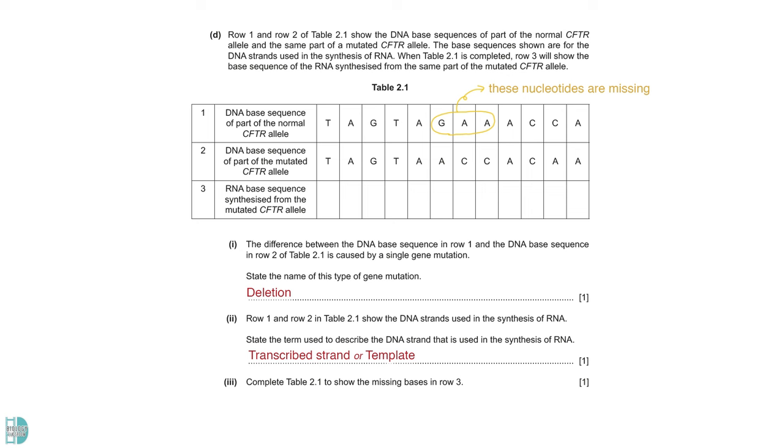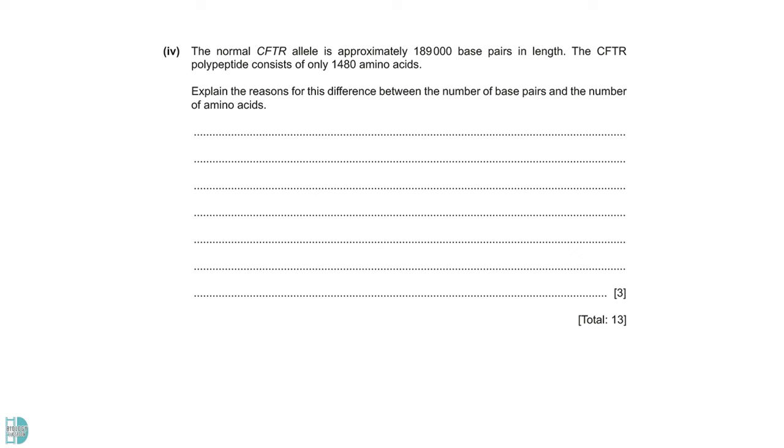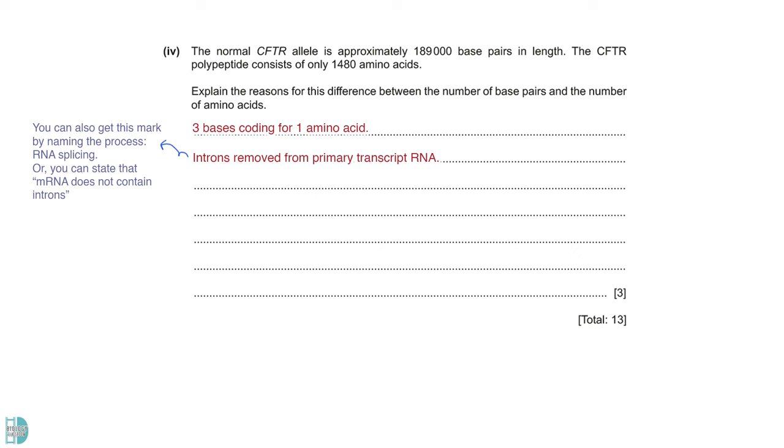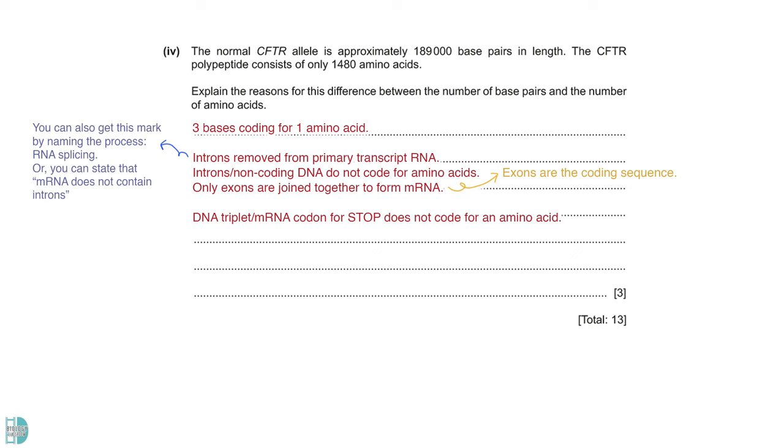Question 3 asks you to complete the third row in the table. The RNA base sequence of an mRNA is complementary to the DNA it is synthesized from. Question 4 says the normal CFTR allele has more base pairs than the polypeptide it codes for. You have to explain the reason for the difference in number. First, remember that 3 bases in DNA code for 1 amino acid. So, you won't have the same number of nucleotides in the gene and the amino acids in the polypeptide. Besides, non-coding sequences called introns are removed from primary transcript RNA in RNA splicing. They are removed because they do not code for amino acids. Only the coding sequence called exons are joined to form the mature mRNA. DNA triplet or mRNA codon for stop does not code for an amino acid either. Methionine, the first amino acid coded for by the start codon, is removed too.